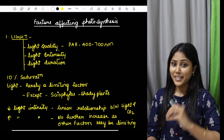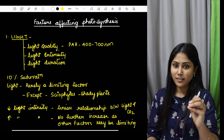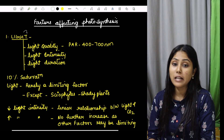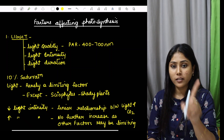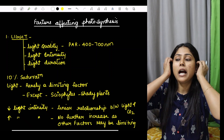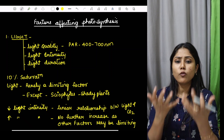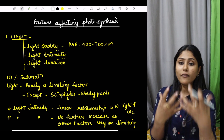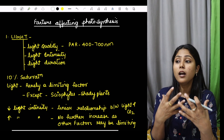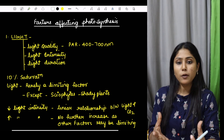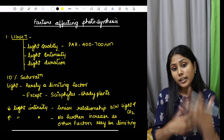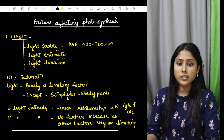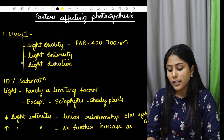Hi everyone, so today is NCERT Day 3. We are going to discuss light under factors affecting photosynthesis. There are direct questions here on factors affecting photosynthesis — this part has the maximum number of repetitive questions. So this topic we will discuss quickly in 3 to 5 minutes.